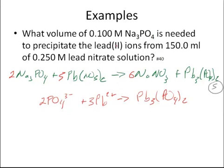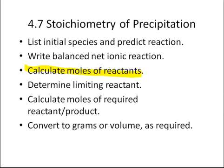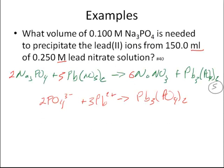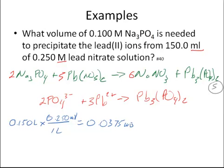Now we've got to figure out what volume of sodium phosphate we're going to need to precipitate this out. I've got a volume here and a molarity. Hopefully from that you realize if I've got a volume and molarity, I can find the number of moles. The next step is always find some moles. I'm going to convert this to liters: 0.150 liters times the molarity, which for one liter is 0.250 moles. That's going to give me 0.0375 moles of my lead ions, Pb.